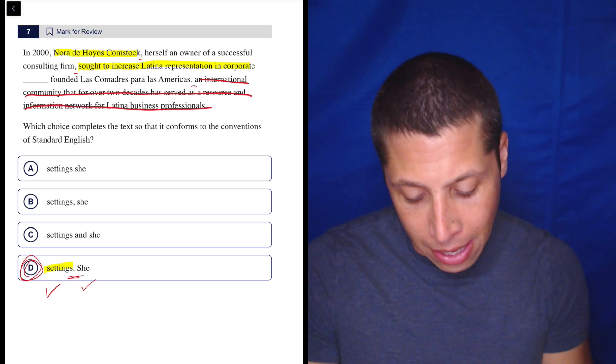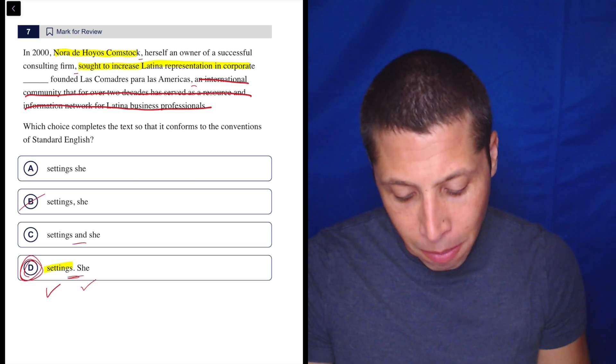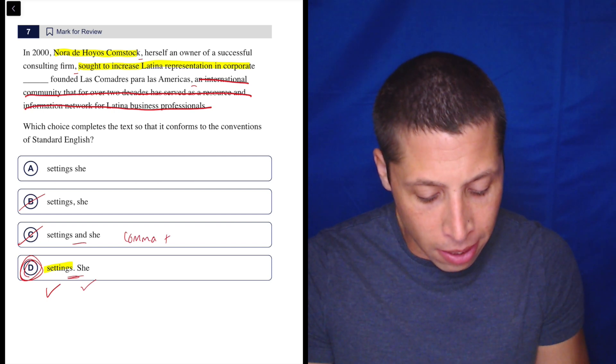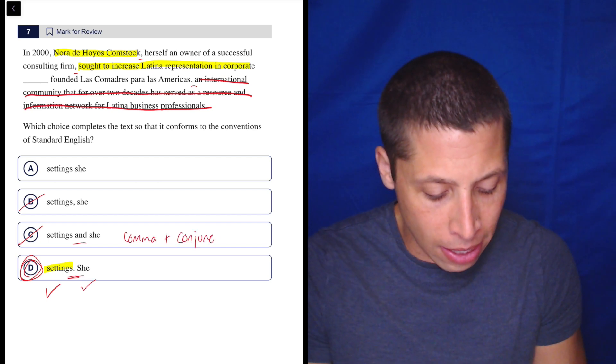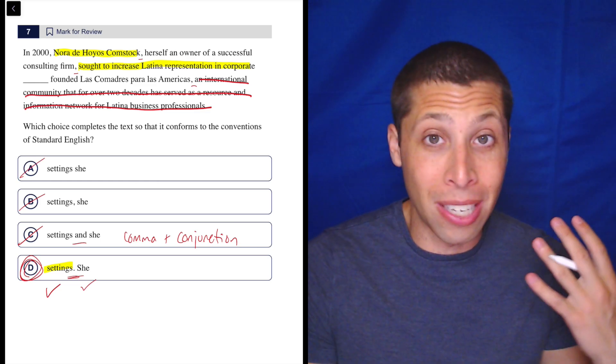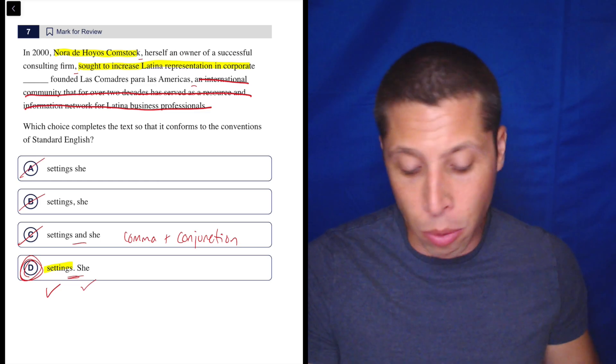No choice. Got to pick D. Comma is not enough. Conjunction by itself is not enough. We need the comma plus the conjunction plus the word and in order to join two sentences. So it's not the same thing. And hopefully you heard that we need some sort of break because to just continue doesn't make any sense.